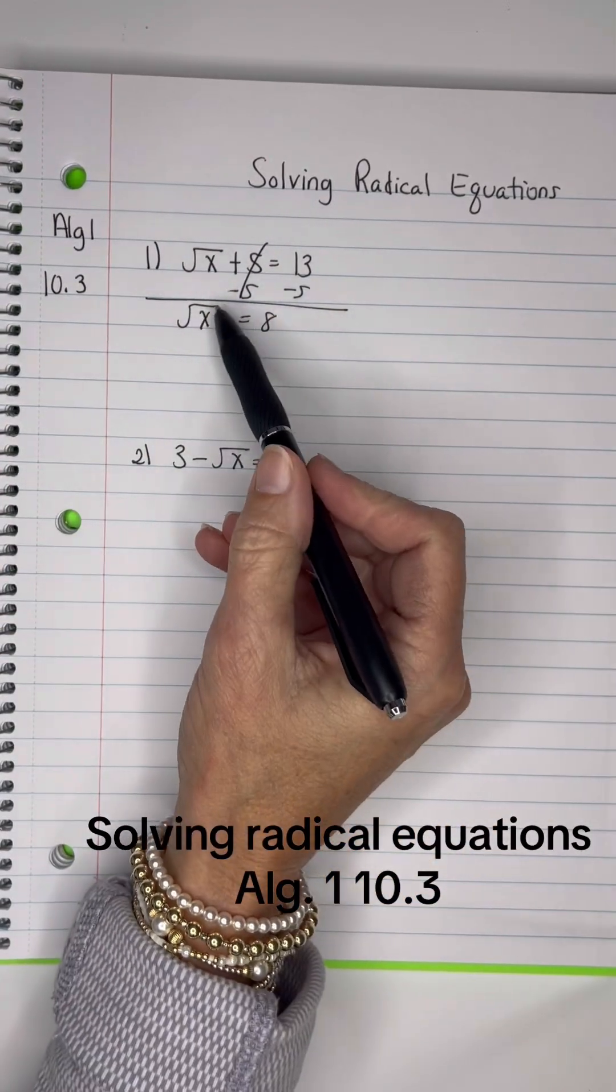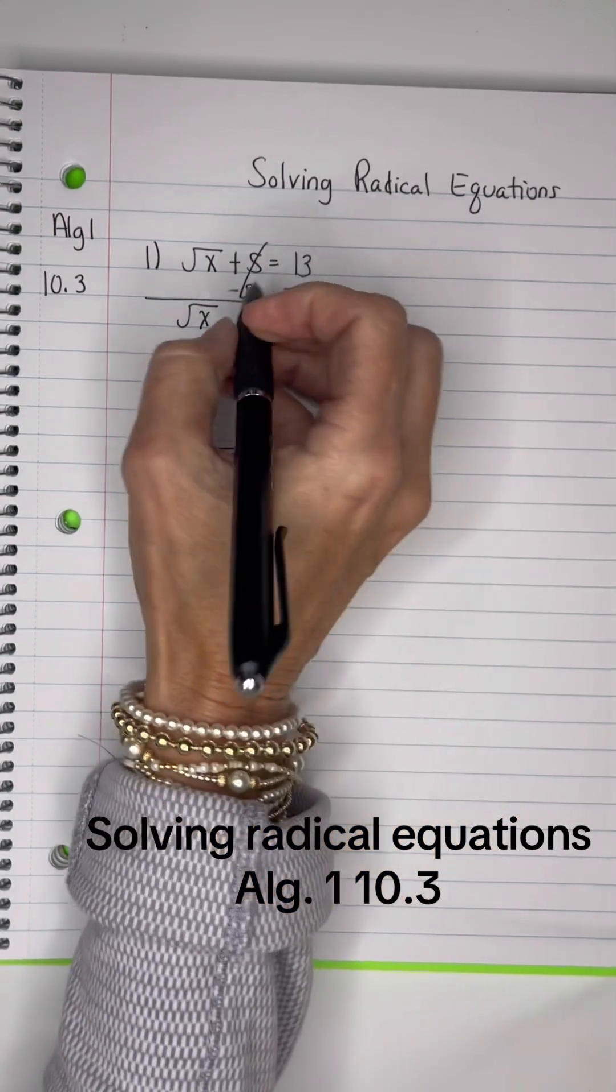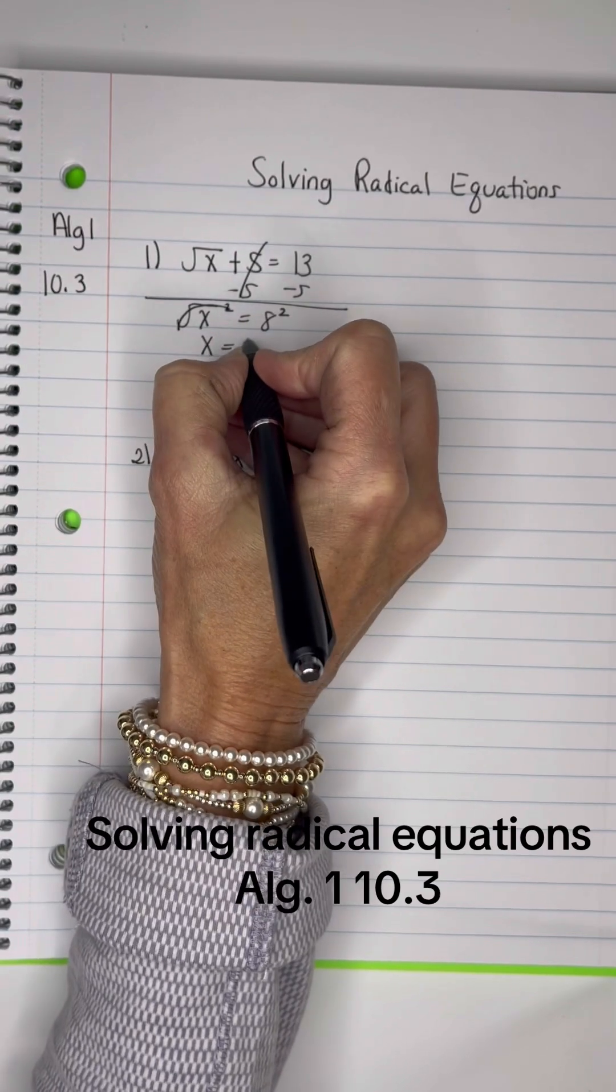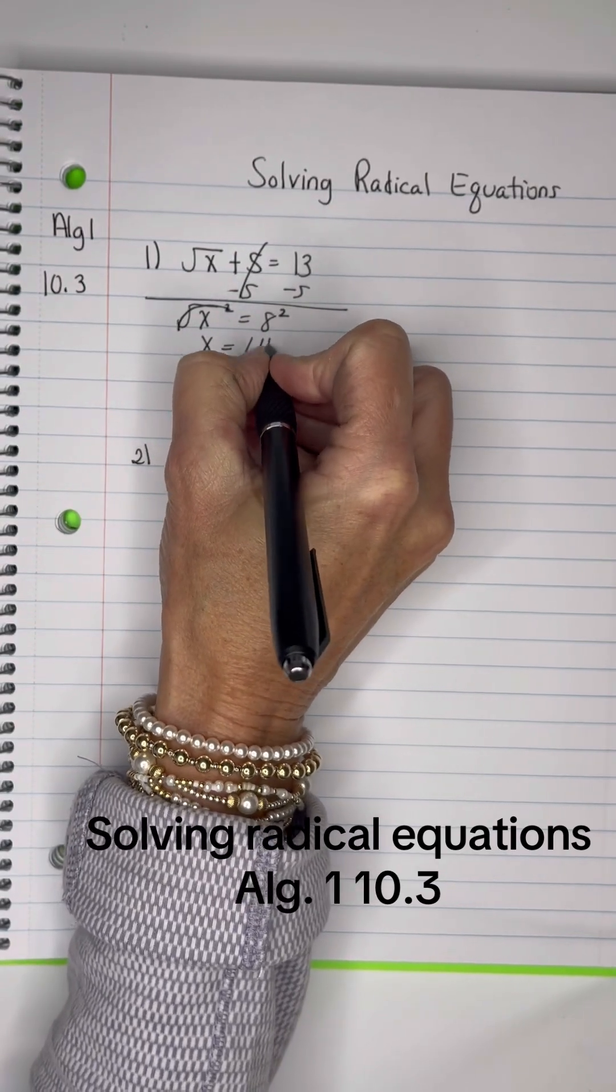Now, what's the opposite of a square root? A square. So I have to square both sides. The square cancels the square root out, and X is 8 squared, which is 64.